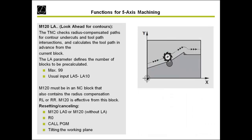There is also another look-ahead function for contour programming. If you see in the picture that the miller is bigger than the contour radius, normally you get an error message that the tool radius is too big. But you can ignore this with the function M120. After M120, you program LA — look ahead — which is the number of sentences the control is allowed to over-read without an error message. With M120, you are allowed to program such a contour with a bigger miller — for example for roughing — without getting any error message. M120 is only possible with radius compensation active (RL or RR).